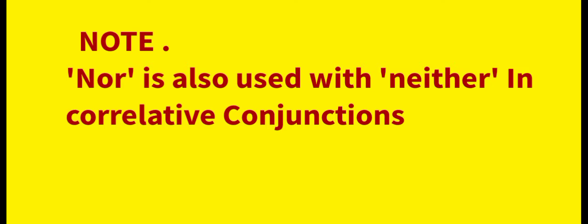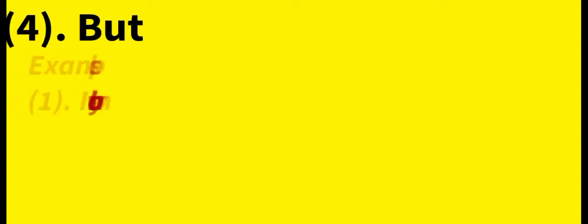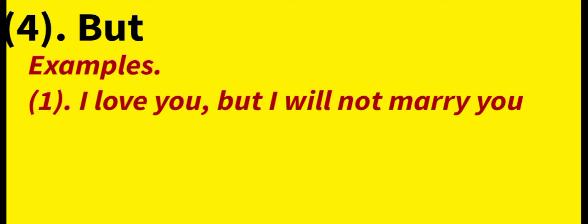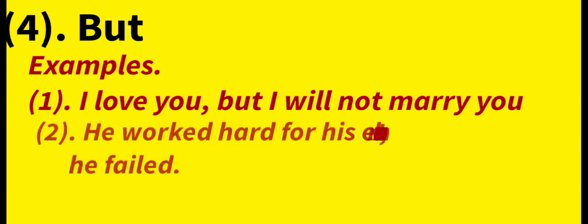The fourth coordinating conjunction is 'But.' It shows contrast. Example: 'I love you but I will not marry you.' There is a contrast — I love you, yet I will not marry you. Next example: 'He worked hard for his exams but he failed.' He worked very hard but the result was that he failed.